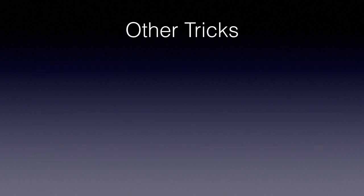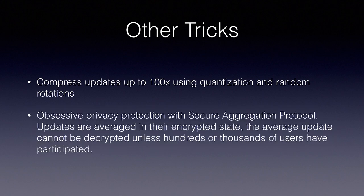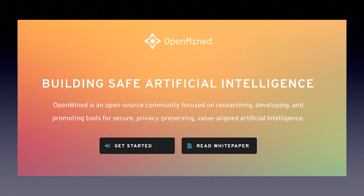Google has several other tricks up its sleeve to improve both the efficiency and privacy guarantees of the process. As upload speeds on household internet connections are often much slower than download speeds, Google has also developed a novel algorithm to compress updates up to 100 times using quantization and random rotations. In other words, we can significantly reduce the precision of the model's weights without compromising accuracy. Next comes the obsession with respecting the privacy of the user's data, which is a very refreshing thing to hear from a tech giant in the age of Big Brother. Google has developed what is called the Secure Aggregation Protocol, which encrypts updates on each device before they are sent. The updates are literally averaged in their encrypted state, and the server can then only decrypt the average update if hundreds or thousands of users have participated. Completely independent of Google's work, an organization called OpenMind has created a Python library called PySyft, which works together with PyTorch to provide both federated learning together with built-in privacy-obsessive encryption.